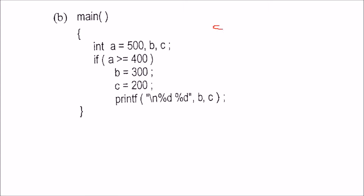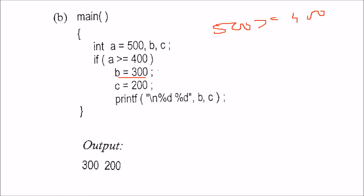Next, a is equal to 500. Is a greater than or equal to 400? Yes, 500 is greater than or equal to 400, so this line will be executed. You will get b as 300, and c will also execute, so c will be 200.